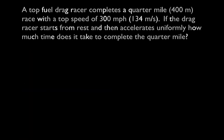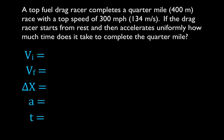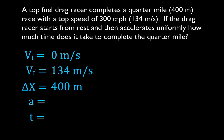The second problem — we're going to do it the same way. We have a top fuel drag racer, once again a quarter mile, with a top speed of 134 meters per second, which is approximately 300 miles per hour. The drag racer starts from rest and accelerates uniformly — how much time does it take to complete the quarter mile? Writing down all five variables: initial velocity is zero (starts from rest), distance is 400 meters, final velocity is 134 m/s. We're solving for time. The car has uniform acceleration but we don't know it, so we ignore acceleration.